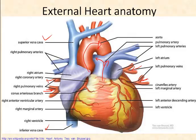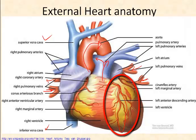Another feature you'll notice on the external heart anatomy is that there are actually blood vessels running through the heart muscle itself. These are coronary arteries, and they deliver oxygen to the heart muscle.